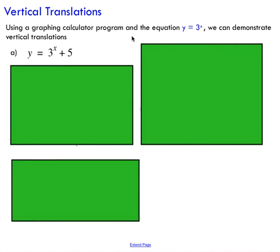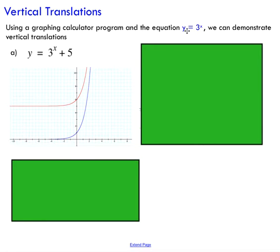We'll start with vertical translation. I'm going to graph y equals 3 to the power of x and compare it to y equals 3 to the power of x plus 5. The blue graph is y equals 3 to the x, compared to y equals 3 to the x plus 5. You can see I've shifted the graph up by 5 units. The exponential function typically passes through (0, 1), but because I'm shifting up by 5, it now passes through (0, 6).